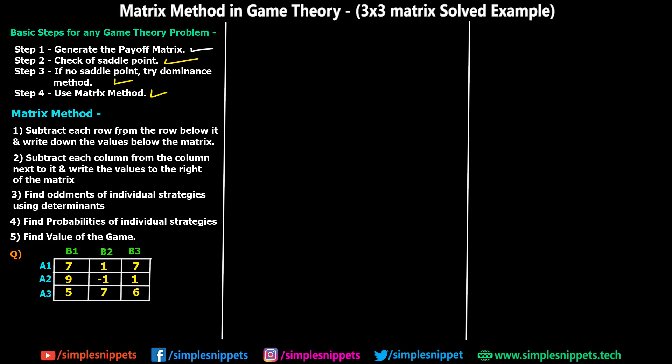The matrix method involves specific steps: subtract each row from the row below it and write the values below the matrix; subtract each column from the column next to it and write the values to the right of the matrix; find oddments of individual strategies using determinants; find the probability of individual strategies; and find the value of the game. These steps apply to a 3×3 matrix.